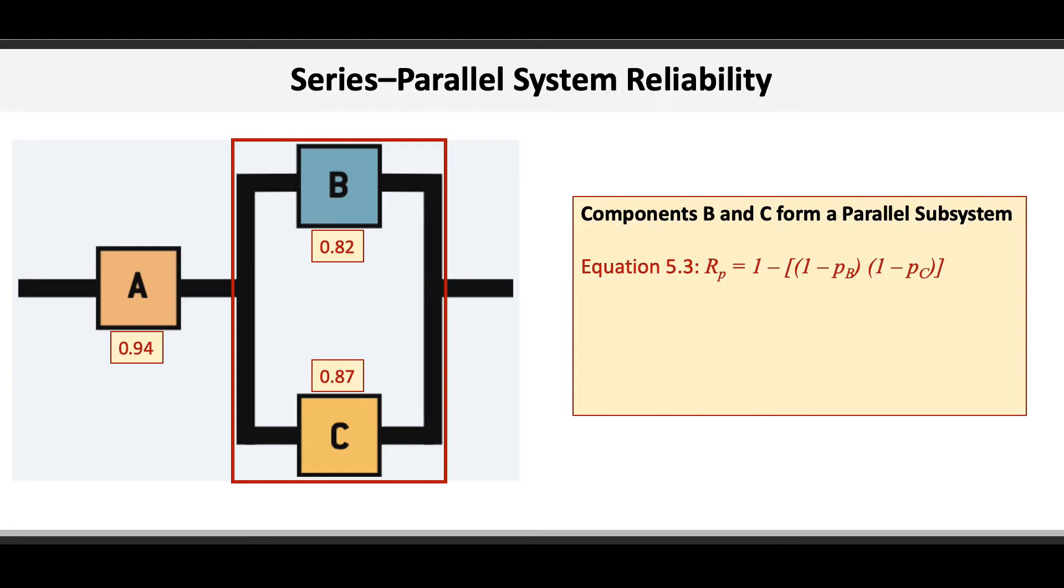We extend that formula to this scenario by determining the reliability of the BC subsystem being equal to 1 minus 1 minus 0.82 times 1 minus 0.87. This reduces into 1 minus 0.18 times 0.13.